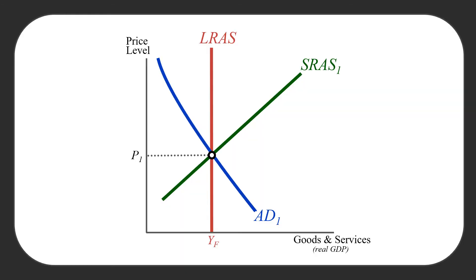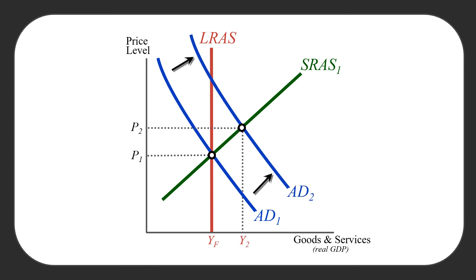We also have to worry about doing too much expansionary monetary policy. If we conduct expansionary monetary policy in an economy that is already at its potential output — our full employment equilibrium — and the Fed goes ahead and buys some bonds, which increases the money supply, it lowers the interest rate and boosts aggregate demand further out.